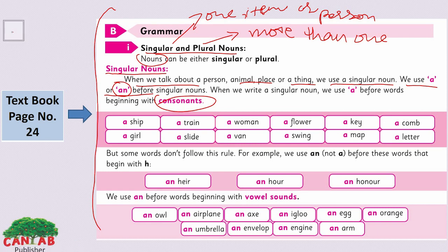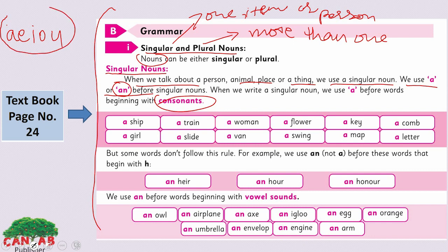Vowel sounds are those words which start with the sound of A, E, I, O, U, and the rest of the sounds are consonant sounds. These are the vowel sounds. The word which starts with the vowel sound, we add 'an' before that word — like 'an apple', 'an orange', etc.